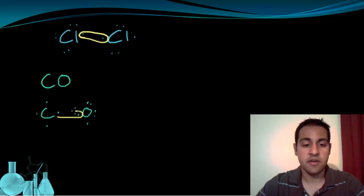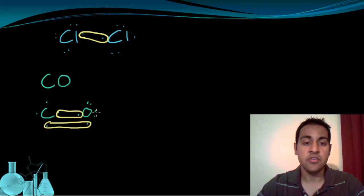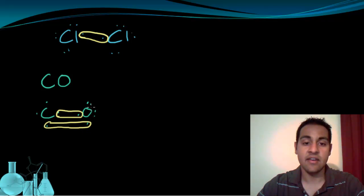We can share this pair, and we can share this pair. Then you'll notice that oxygen has run out of free electrons to share, and oxygen, if we count it up, will see is at an octet: one, two, three, four, five, six, seven, eight. So oxygen is all set here, but carbon is not.